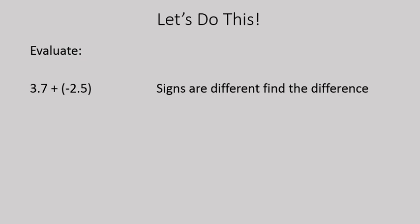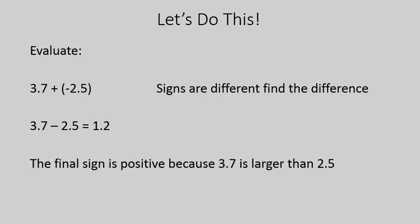If we're asked to evaluate 3.7 plus negative 2.5, the signs are different, so we're going to find the difference between these two numbers. Or in other words, we're going to subtract. 3.7 minus 2.5 gives us 1.2. And now we need to find the final sign. The final sign in this case will be positive because 3.7 is larger than 2.5. So we have more positives than we have negatives. Makes sense.